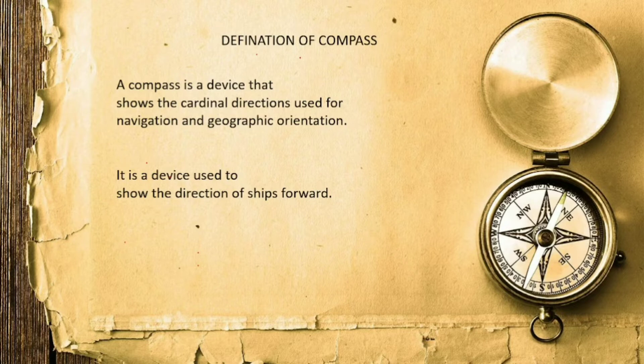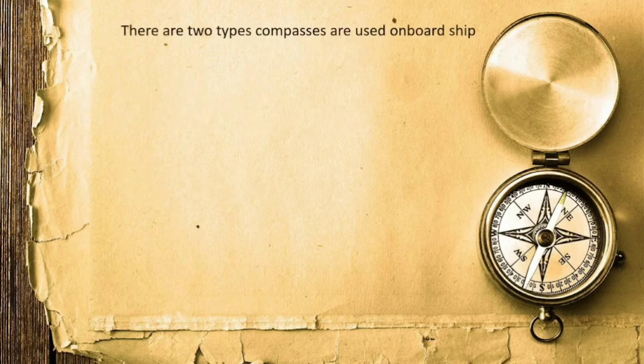We use the compass in the shipping field. It is a device used to show the direction of ships forward. The compass should be used on the ship so that the ship can move forward in any direction. We use two types of compass on board: the gyro compass and the magnetic compass.